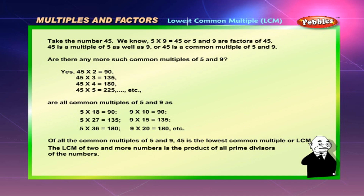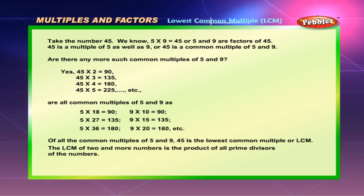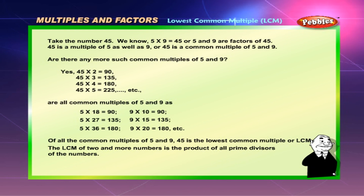Lowest common multiple (LCM): take the number 45. Since 5 × 9 = 45, both 5 and 9 are factors of 45, making 45 a common multiple of 5 and 9. There are more common multiples: 45 × 2 = 90, 45 × 3 = 135, 45 × 4 = 180, 45 × 5 = 225, and so on. Of all common multiples of 5 and 9, 45 is the lowest common multiple or LCM.